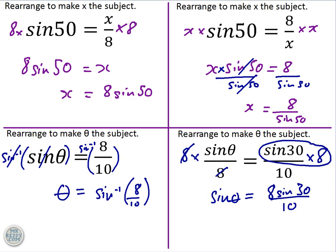And now we need to do the inverse of sine to both sides. Arc sine both sides. And what you get when these two cancel out is that theta equals arc sine, brackets, 8 sin30 over 10, close brackets.